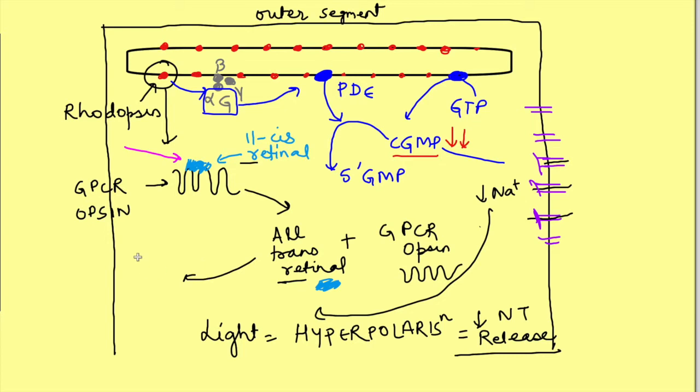In the meantime, this all-trans retinal gets converted to 11-cis retinal by the enzyme isomerase and goes and binds with opsin again ready for the next stimulus.